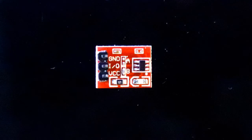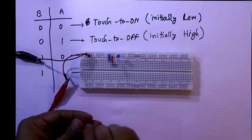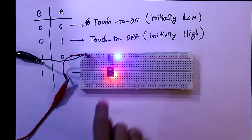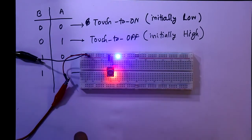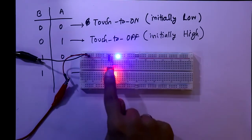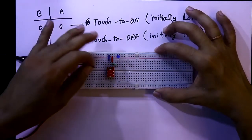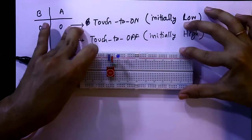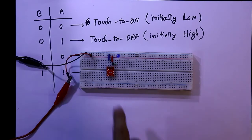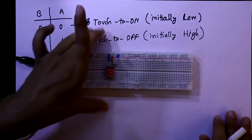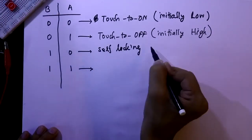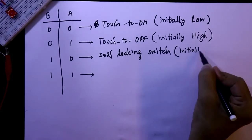Now this time it is only B. Now this time it is working as self-locking switch or toggle switch. One touch off, another touch on. So it is working like this, and its initial condition is whenever I power up this circuit it will be initially low. Touch to high, touch to low. So it is working as self-locking switch and its initial condition is low.